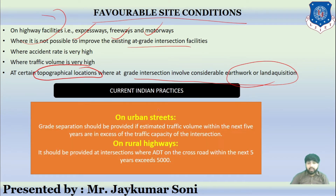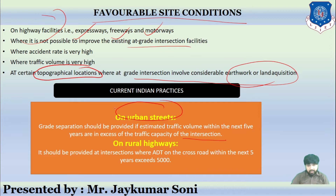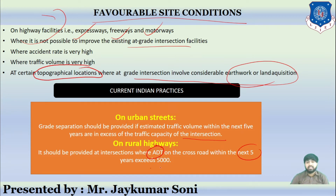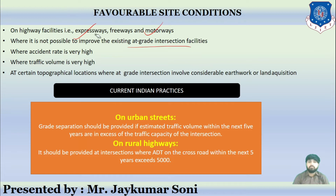Regarding current Indian practices: in case of urban streets, grade separation should be provided if the estimated traffic volume within the next 5 years is in excess of the traffic capacity of the intersection. In case of rural areas, it is provided at intersections where the annual daily traffic on the crossroad within the next 5 years exceeds 5,000 vehicles. These are the favorable Indian current practices.